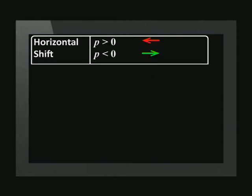The value of p shifts the graph left and right. If p is positive, the graph will shift to the left. If p is negative, then the graph will shift right.